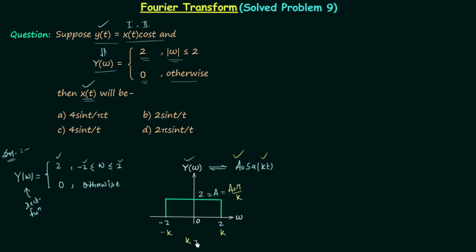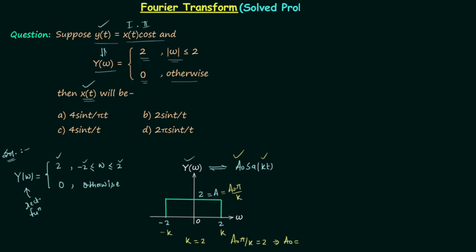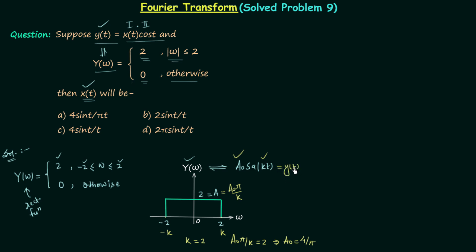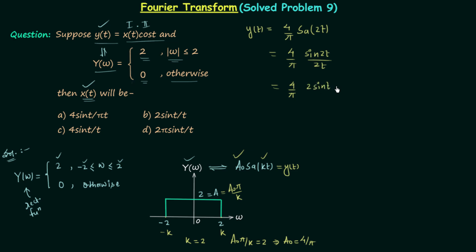It is clear that k is equal to 2, and a₀π/k is equal to 2, which implies a₀ is equal to 4/π. So y(t) equals (4/π)·Sa(2t). We know Sa(2t) equals sin(2t)/(2t), so we have (4/π)·sin(2t)/(2t). Using the identity sin(2t) = 2sin(t)cos(t), we get (4/π)·2sin(t)cos(t)/(2t), and the factors of 2 cancel out.